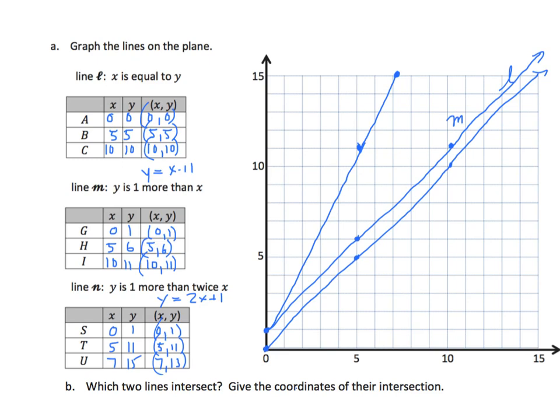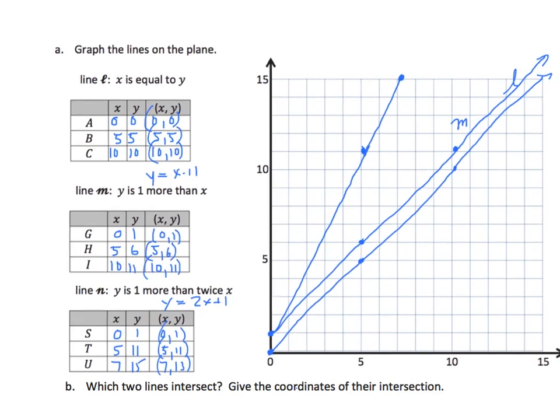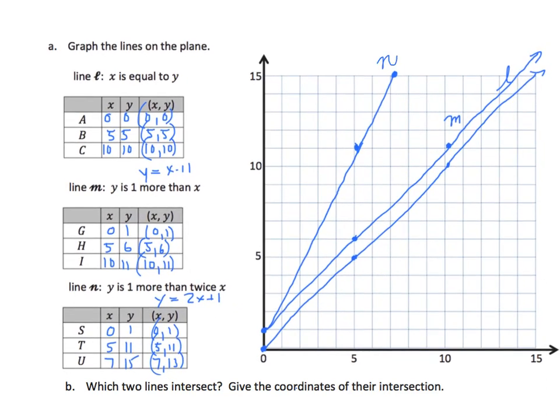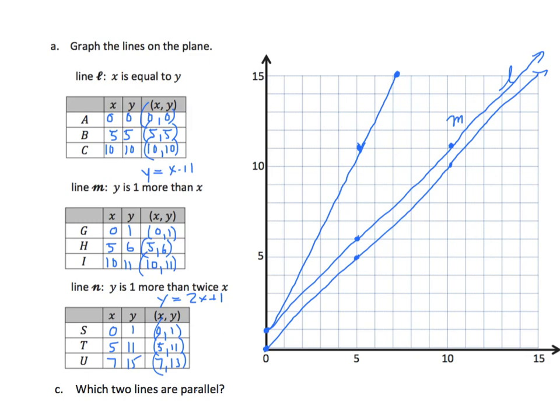Now we have some questions to answer about that. It says, which two lines intersect? Well, that would be line N and M. Where do they intersect? They intersect at the y-axis. So, the value at which they intersect is zero and one. Next, it asks which two lines are parallel. And those would be lines M and L. And L is really the label for that line right there.